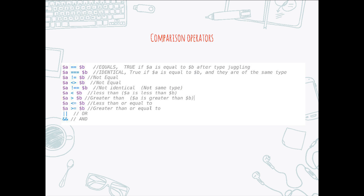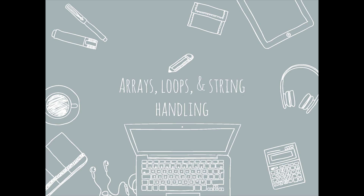Here are the comparison operators. Make sure you look up the list of PHP comparison operators and be familiar with it. Also understand that one equal sign assigns a value, where two equal signs means exactly equal to. Arrays, loops, and string handling — I will go over simple arrays, associative arrays, looping through them, and string types.